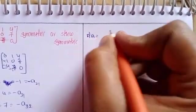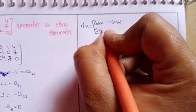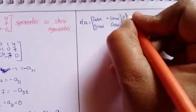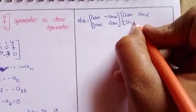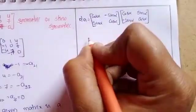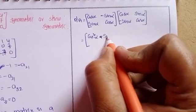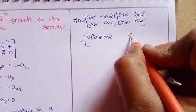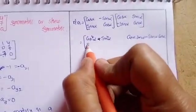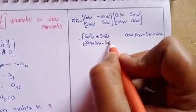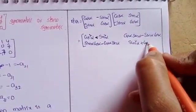Continuing A into A transpose: minus sin squared alpha, and cos squared alpha. This gives the first product. Now A transpose into A: A transpose is cos alpha, minus sin alpha, sin alpha, cos alpha, into A which is cos alpha, sin alpha, minus sin alpha, cos alpha. Multiplication process: cos squared alpha plus sin squared alpha. Next, cos alpha sin alpha minus sin alpha cos alpha. Next, sin alpha cos alpha minus cos alpha sin alpha. Next, sin squared alpha plus cos squared alpha.